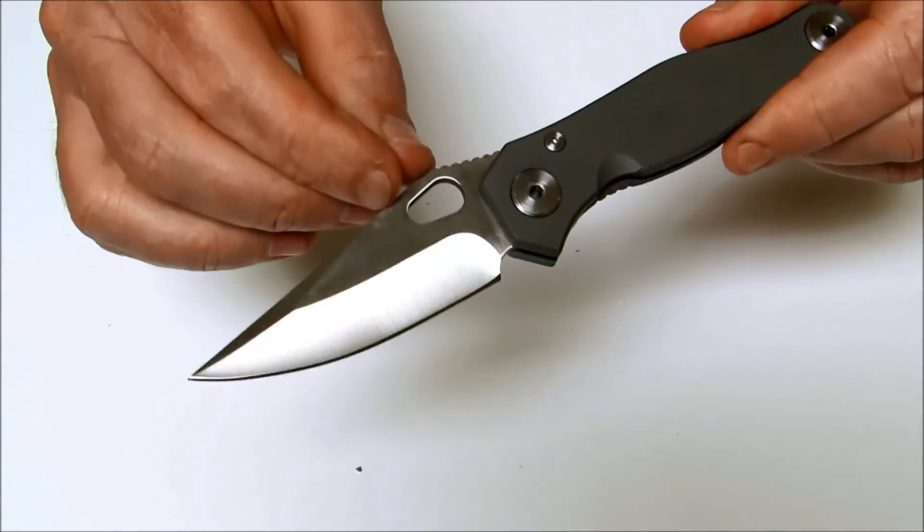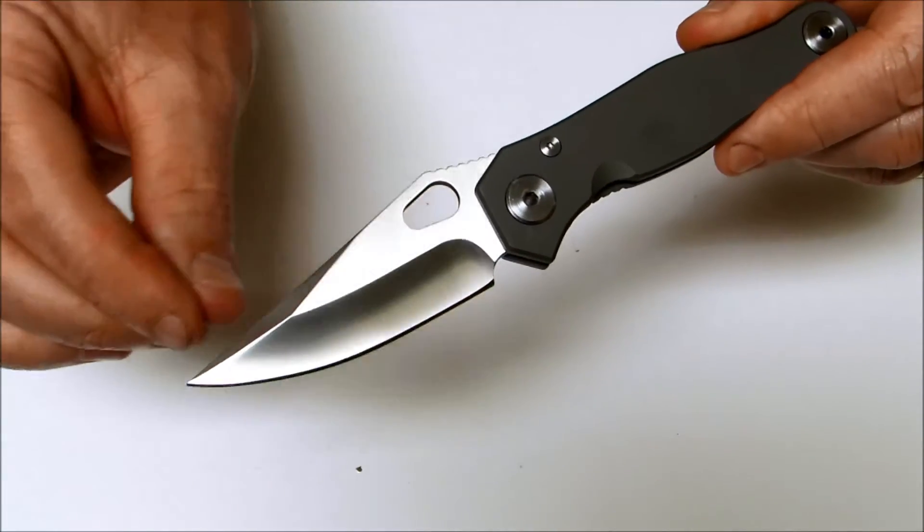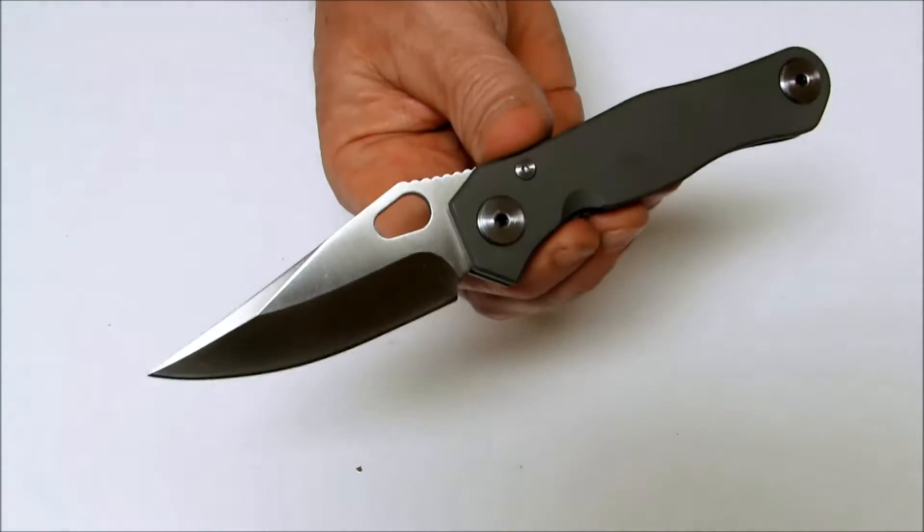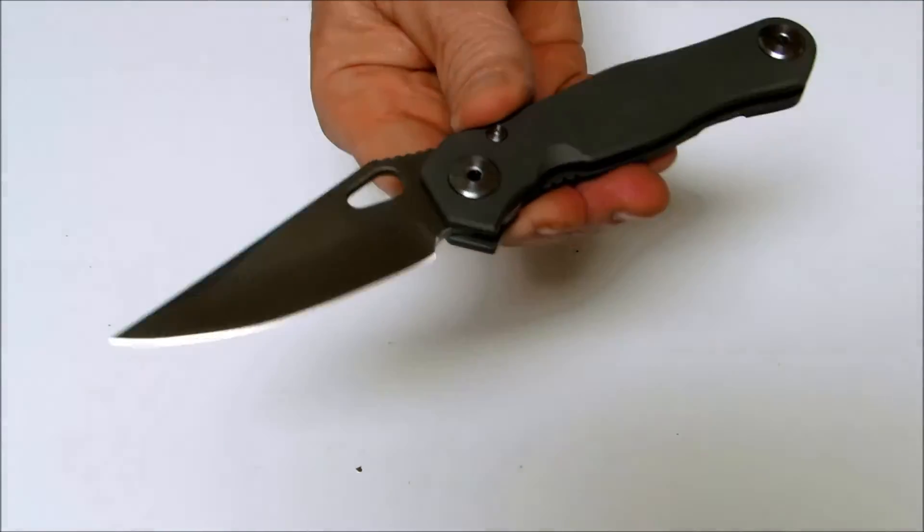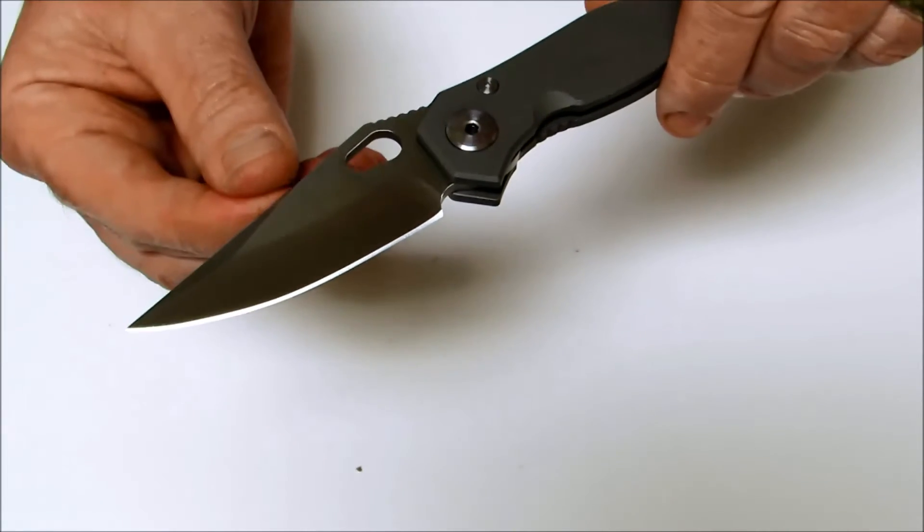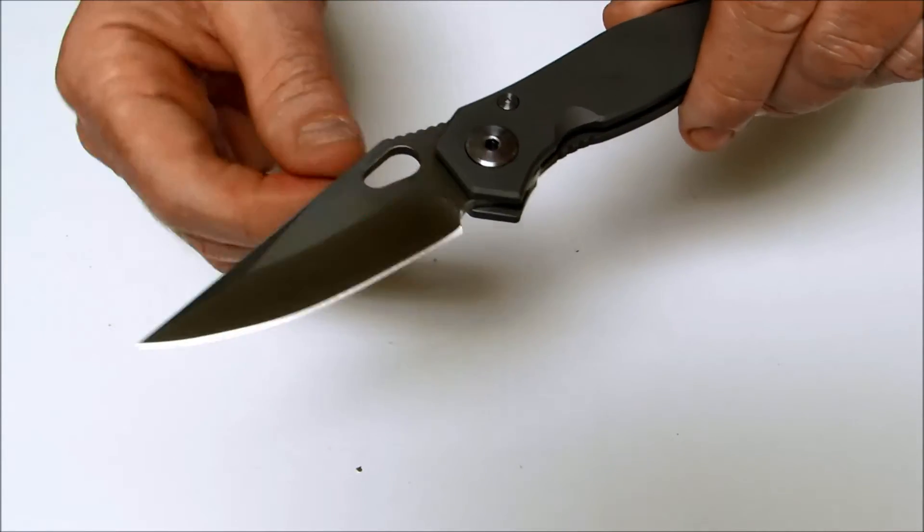This is the Mr. Roper with a high polish satin stainless steel CPM 154 stainless steel blade. It's got a clip point style blade on it with a swedge on the top.